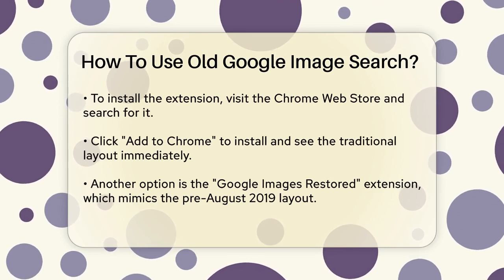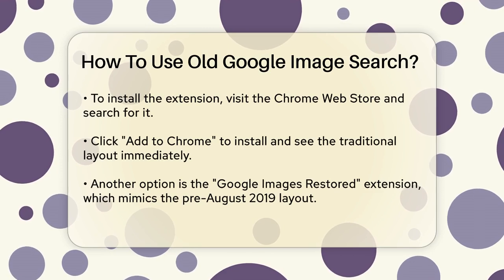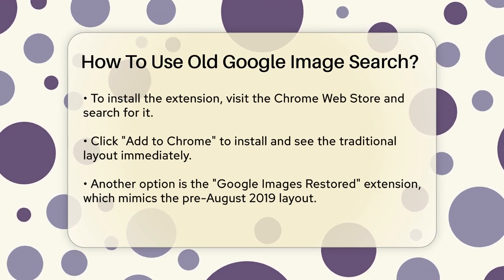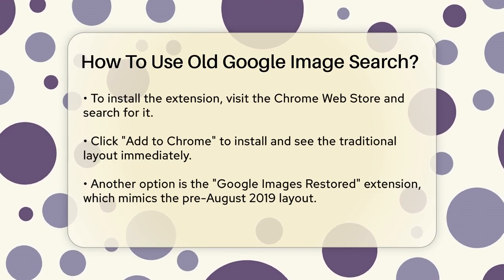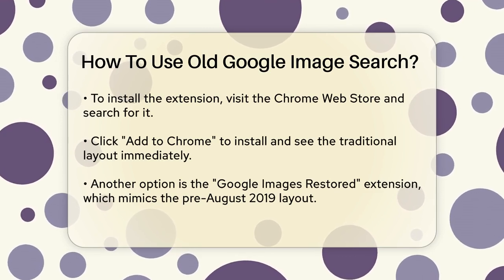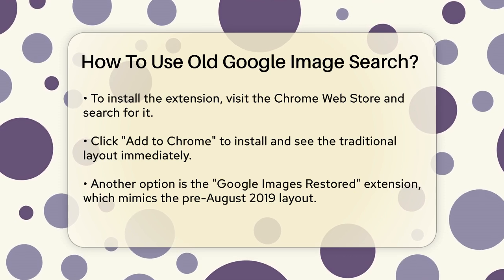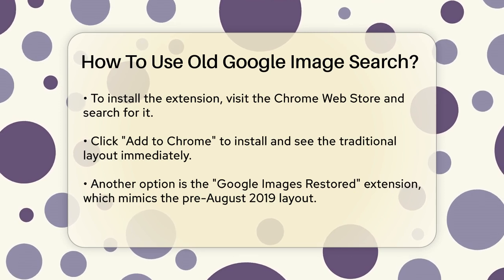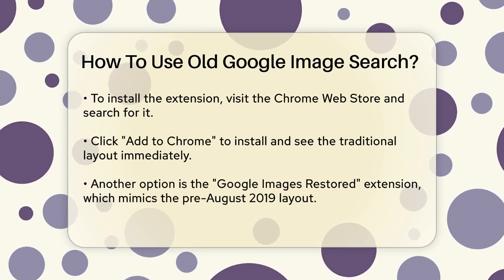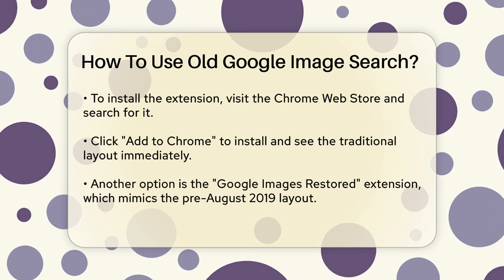To install this extension, open the Chrome Web Store, search for Old Images Redirect Disable Google Lens, and click the Add to Chrome button. Once installed, you'll instantly see the traditional Google Images layout, and Google Lens will be disabled.